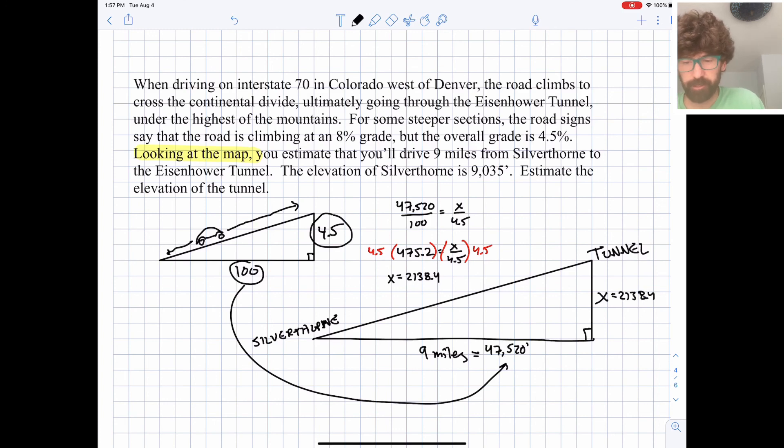And so let's add on our elevation of Silverthorne, which is 9,035 feet. And we get a tunnel elevation of 11,173.4 feet above sea level. So over 11,000 feet high, probably right about at treeline. Hope you can maybe make that drive sometime. It's really a beautiful drive. And that's a good place to stop, right there.